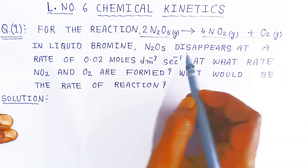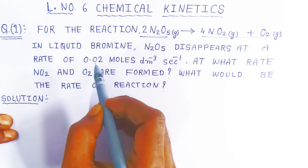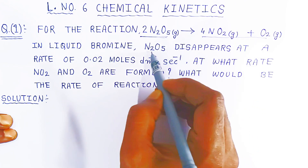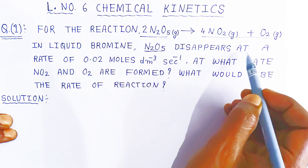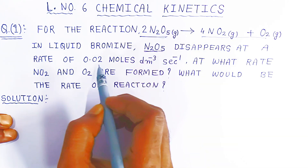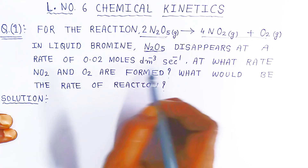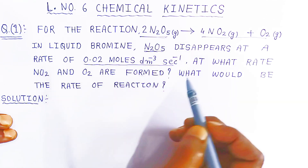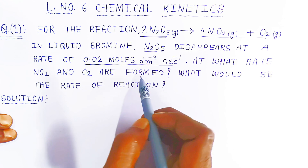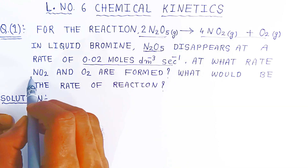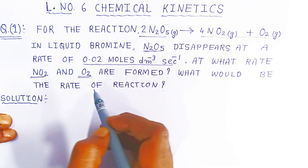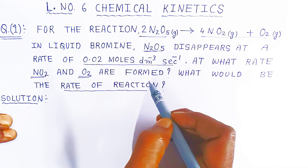Nitrogen pentoxide disappears at a rate of 0.02 mole per dm³ per second. The rate of disappearance of N₂O₅ is given as 0.02 mol/dm³/s. We have to calculate: at what rate are nitrogen dioxide gas and oxygen gas formed, and what is the rate of reaction? This is a 3-mark question.